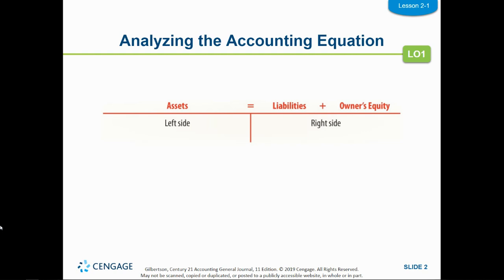Analyzing the accounting equation — we know that the accounting equation is assets equals liabilities plus owner's equity. And if you draw a little T underneath it, we have a left side and a right side. Assets always fall on the left side; liabilities and owner's equity always fall on the right side. As we analyze transactions in this chapter, we're going to be asking: do they fall on the left side or the right side, and do they increase or decrease?